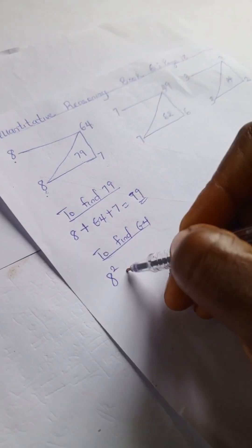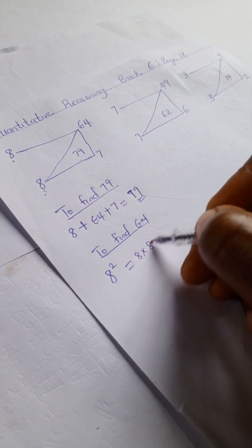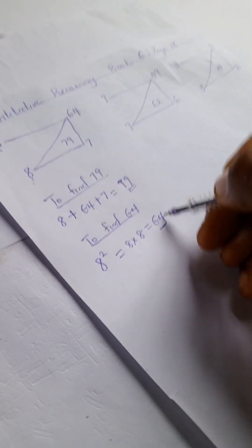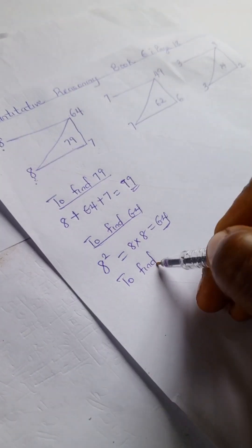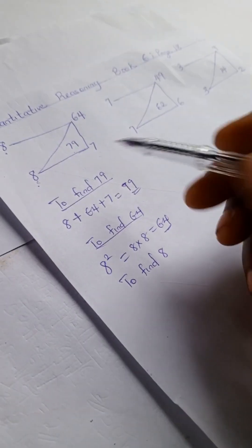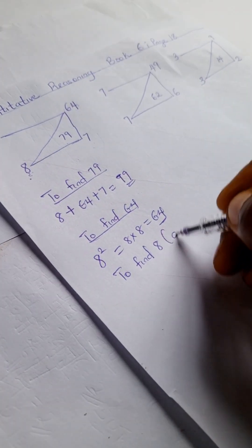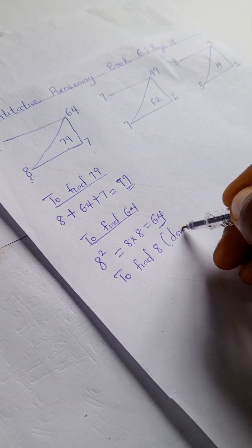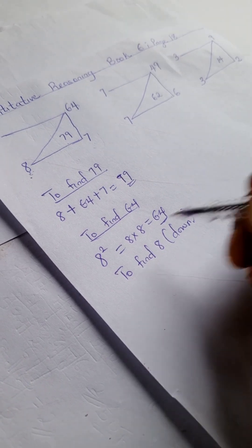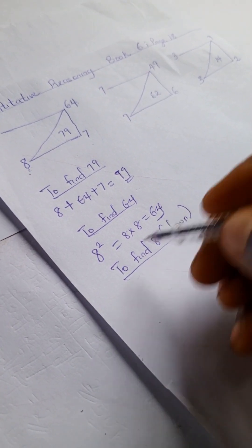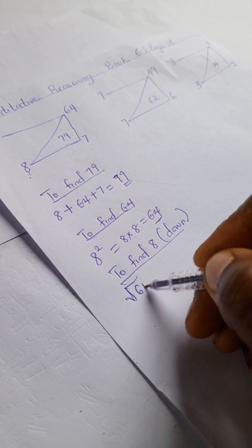To find 64, we're going to have 8 squared. 8 squared gives us 8 times 8, and 8 times 8 is 64. To find 8 down here, we're going to take the square root of 64, which gives us 8.